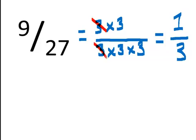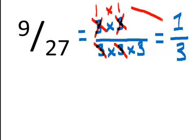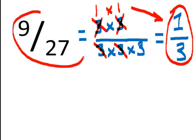Now, this 3 cancels with that 3, and this 3 cancels with this 3 — it doesn't really matter which. Now you see perhaps why it becomes very important that this doesn't become 0 or just go away — it becomes the number 1, because 1 times 1 is 1, and we just have a 3 left over. So that becomes 1 third. If these went away, then we would have 0 over 3, and that wouldn't work. So 1 third and 9 twenty-sevenths live at the same place on the number line.